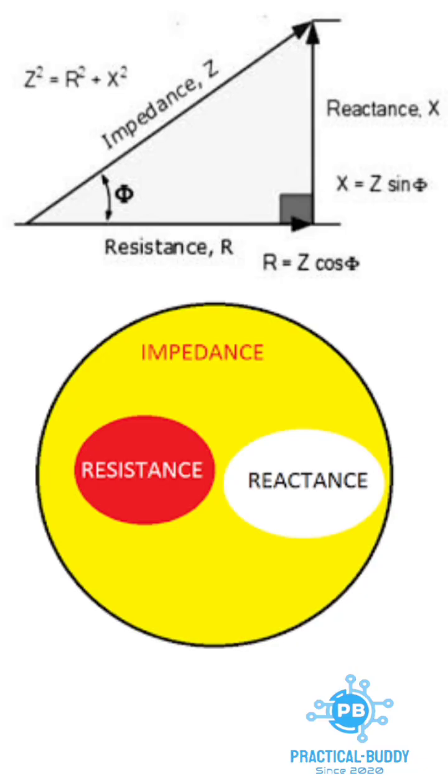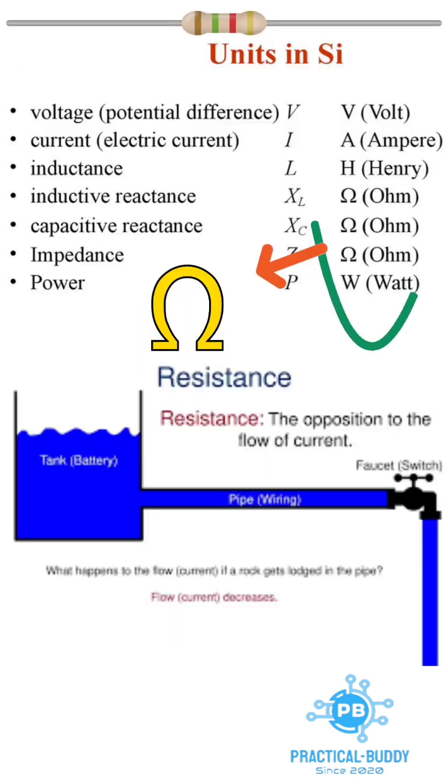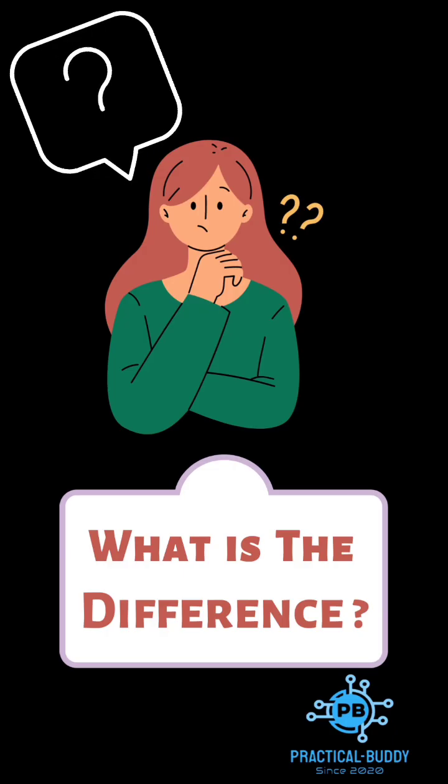Hello engineers, in this video we are going to see the difference between resistance, reactance, and impedance. The meaning and unit of all three terms are the same - that is, to oppose the flow of current. So what exactly is the difference between them?